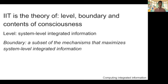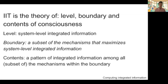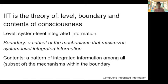The first part of the lecture is a recap of IIT. As I said last week, IIT is a theory of the level, the boundary, and the contents of consciousness. The level of consciousness is the system-level integrated information, approximated by the PCI, but the real integrated information is not really like that PCI number — I'll try to explain this. The boundary of consciousness is a subset of the mechanisms that maximizes system-level integrated information. The contents of consciousness, or qualia, is the pattern of the integrated information among all subsets of the mechanism within this boundary — that will be the topic next week.